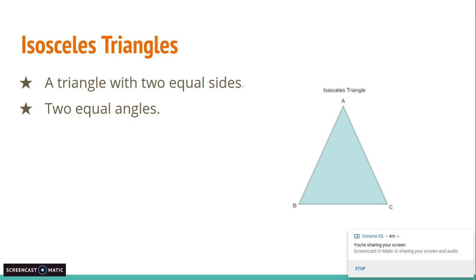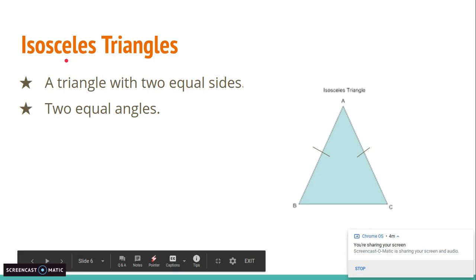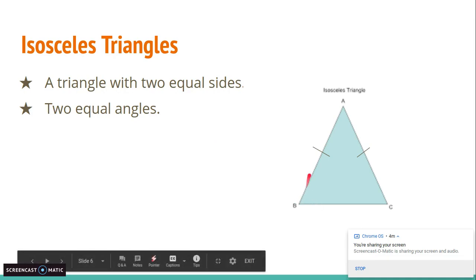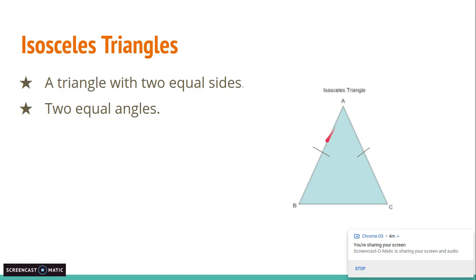The next triangle we're talking about is an isosceles triangle. An isosceles triangle is any triangle with two equal sides. Here you can see that this side is equal to that side — and since these sides are equal, this is an isosceles triangle. It doesn't really matter what the third side is; as long as you have two equal sides, that's an isosceles triangle. An isosceles triangle also has two equal angles, between one of the equal sides and the other side.